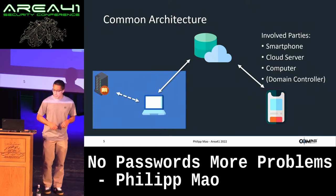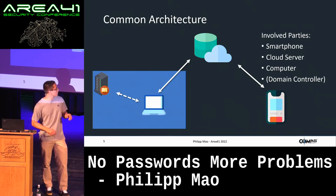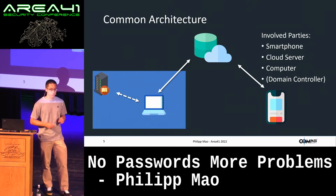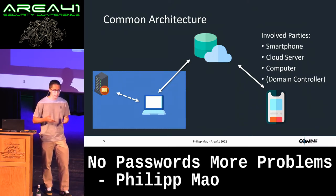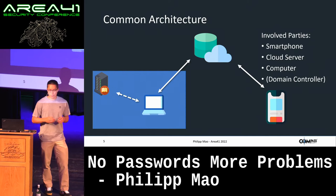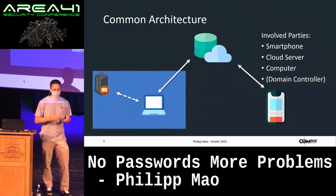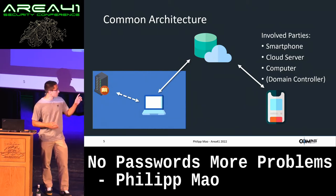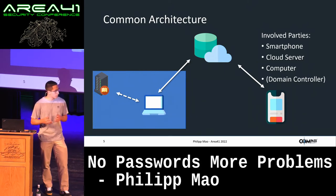The involved parties in these products are: the smartphone, the server, the computer, and the domain controller. When logging into your computer on an Active Directory corporate network, you authenticate to the domain controller to access network resources. The domain controller part doesn't really change with these passwordless products — the main functionality is implemented on the smartphone, the server, and the computer.